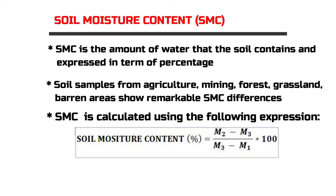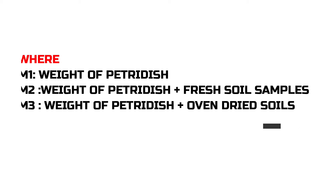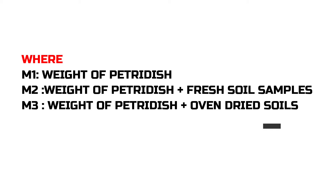The formula used for calculation of soil moisture content is expressed in percentage as: soil moisture content (%) = (M2 − M3) / (M3 − M1) × 100, where M1 stands for the weight of the petri dish, M2 stands for the weight of the petri dish plus the fresh soil samples, and M3 stands for the weight of the petri dish plus the oven-dried soil samples.